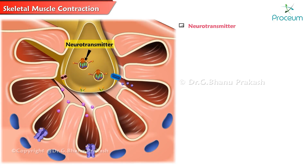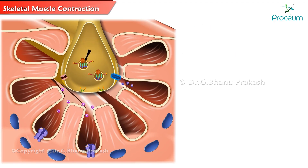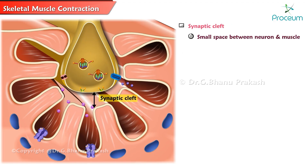Neurotransmitter is a chemical substance released from a motor nerve fiber causing stimulation of the sarcolemma of a muscle fiber. In this case, it is acetylcholine. Synaptic cleft is a small space between the neuron and muscle.